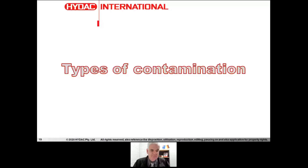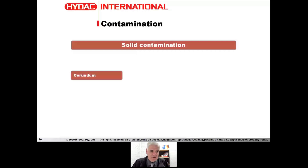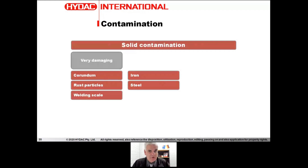Let's explore the types of contaminants. When we think of contamination, the first thing we think of is solid contamination — the particles. Particles can be very many things: abrasive grinding disc material, rust particles, welding scale — these are very damaging because they're very hard. Other metals involved in the system include iron from castings and steel from steel components.